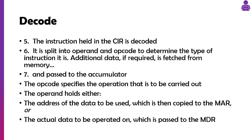We then look at the instruction held in the CIR and figure out, based on its opcode and operand, what it's actually asking us to do — is it an add command, a store command, a load, whatever it is? If it needs additional information, for example an add command adding to register three, it fetches that data and passes it to the ALU and the accumulator to perform the operation.